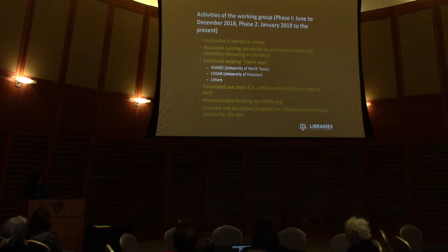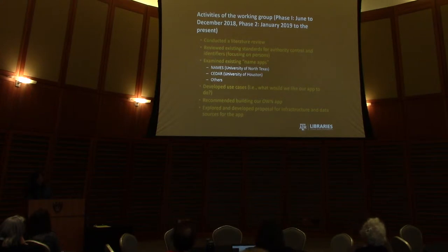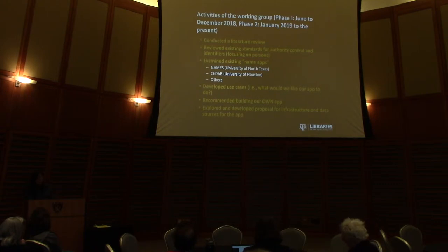Most of our activities took place during phase one last year; we are in the middle of phase two now. We did an environmental scan, looked at published literature, reviewed existing standards for authority control focusing on people, and looked at existing solutions implemented elsewhere. We looked at NAMES at the University of North Texas and even visited them, and looked at CEDAR at the University of Houston. We also developed use cases to clarify what we'd like our own app to accomplish. Based on all this, we recommended developing our own app in-house rather than adopting or adapting an existing solution.